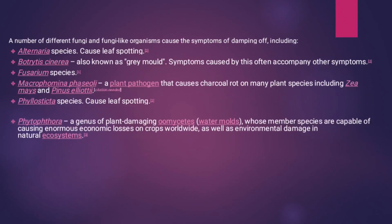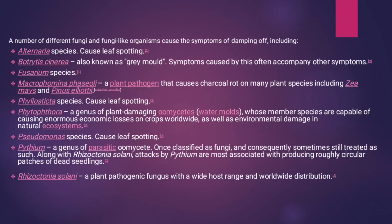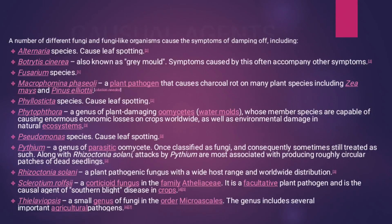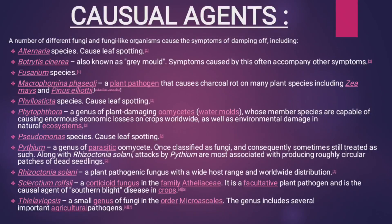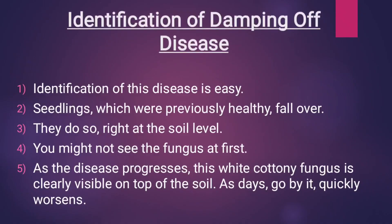Here are the casual agents: a number of different fungi and agents that cause the symptoms of damping-off disease. Here is the list of agents — these are all casual agents. The disease cannot be identified easily because seedlings topple over or fall over to the ground. The seedlings may suddenly topple off right at the soil level.